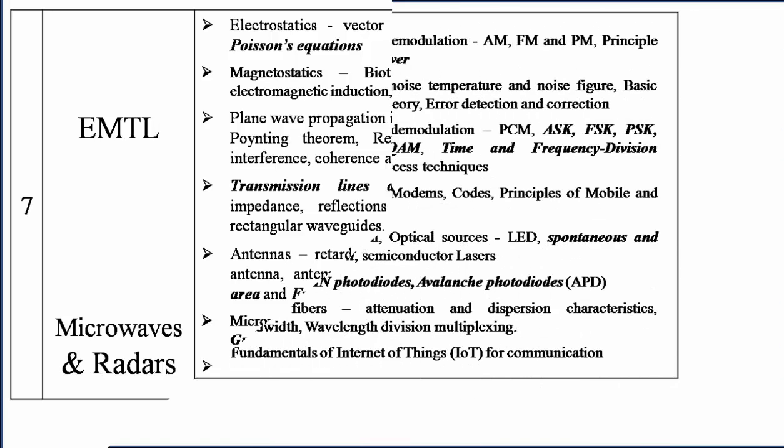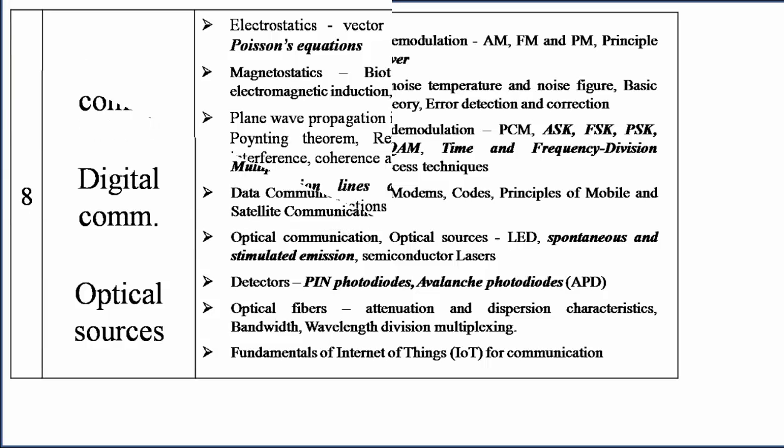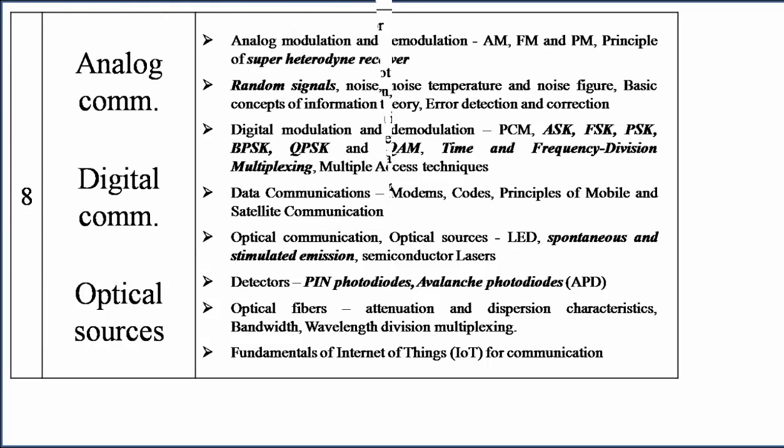Important topics in EMTL are transmission lines, waveguides, and antennas. In microwaves and radars, be familiar with gun diode, IMPATT diode, and PIN diode. The radar range equation is very very important, along with frequencies, block diagrams, clutter, and clutter jitter.